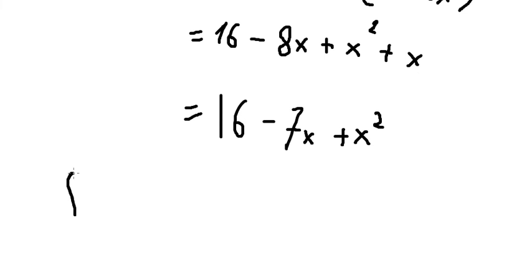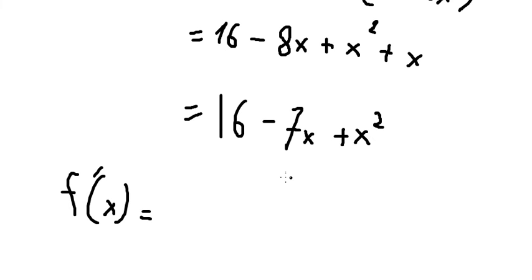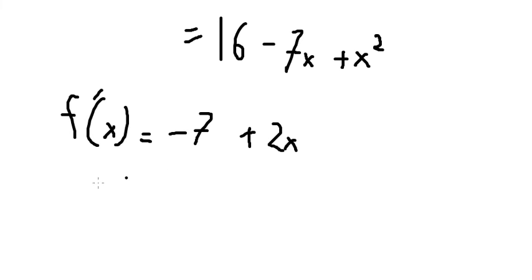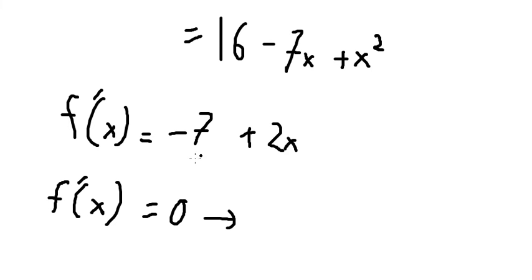Next we need to find the first derivative of the function, because we want to find the critical point. The first derivative of 16 is zero, the first derivative of negative 7S is negative 7, and the first derivative of S squared is 2S.